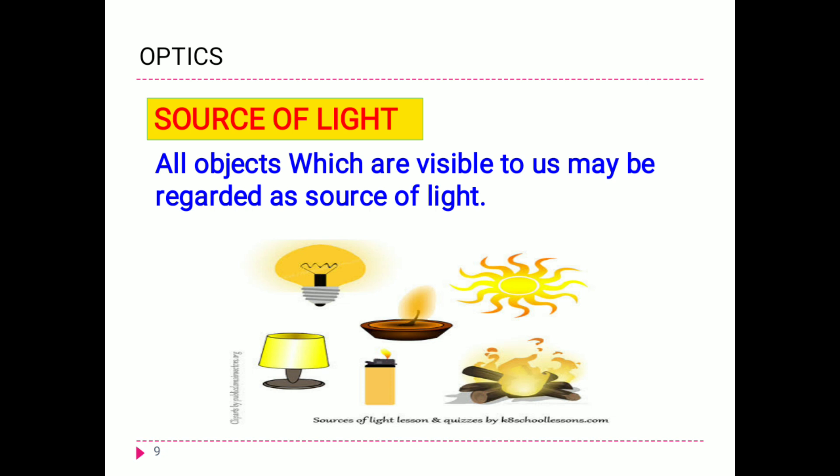Now we go to the source of light. What is the source of light? All objects which are visible to us may be regarded as a source of light. For example, sun, stars, bulb, candle, lamp, mountains, wall — whatever visible things are there, those are called a source of light.